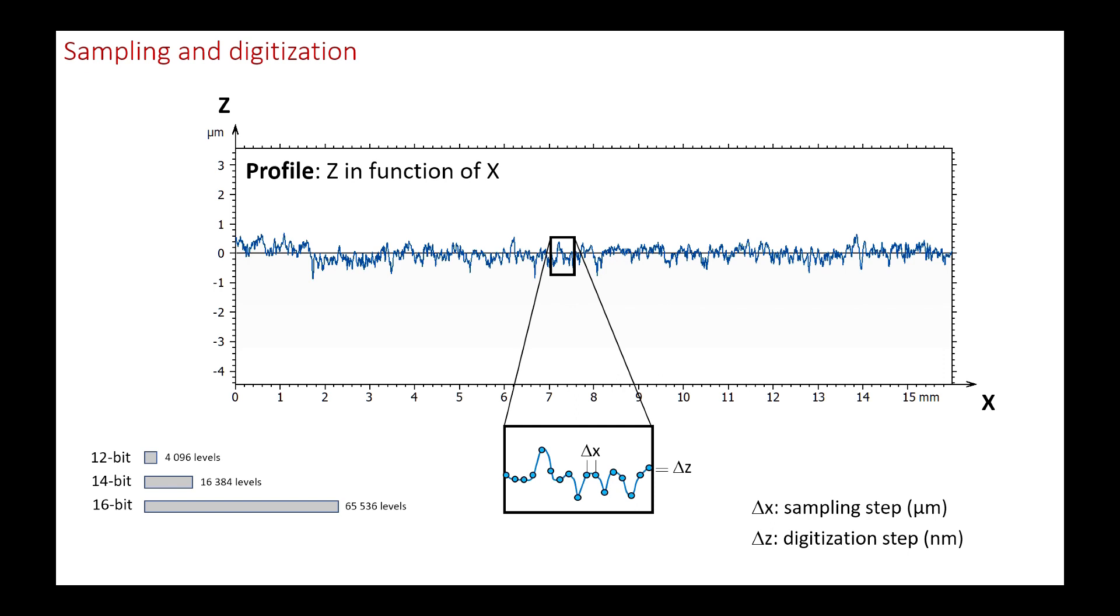The vertical step is just computer resolution. It does not prejudge the measurement uncertainty, which is the real ability to differentiate two close levels in height.